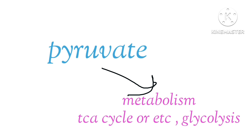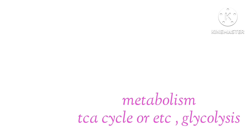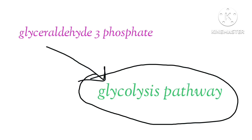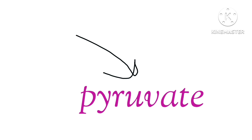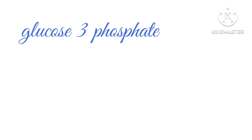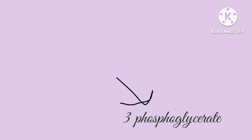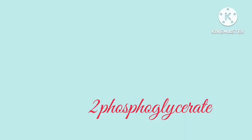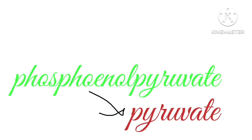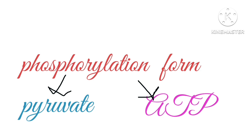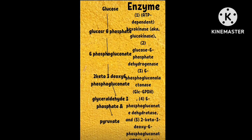The pyruvate produced in the ED pathway goes on to further metabolism via the TCA cycle or electron transport chain. The glyceraldehyde-3-phosphate enters the glycolytic pathway and is further converted to pyruvate, proceeding through 1,3-bisphosphoglycerate, 3-phosphoglycerate, 2-phosphoglycerate, and phosphoenolpyruvate, finally yielding pyruvate and ATP via the enzyme pyruvate kinase, which serves as an additional regulatory step similar to phosphoglycerate kinase.